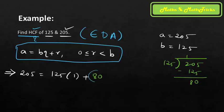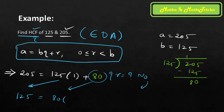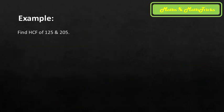Step 2: 125 = 80 × 1 + 45. Since 80 twos are 160, I take 80 ones giving remainder 45. Is the remainder zero? No. So continue: take 80 as the dividend and 45 as the divisor.